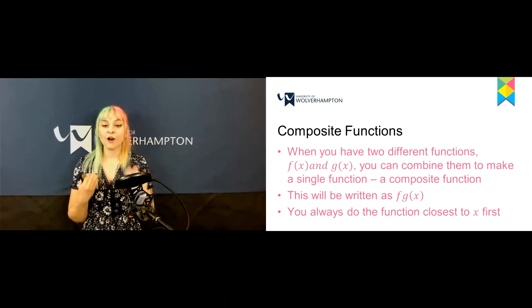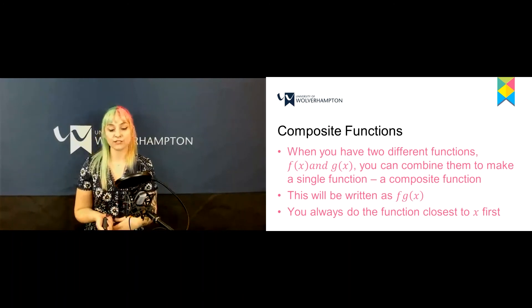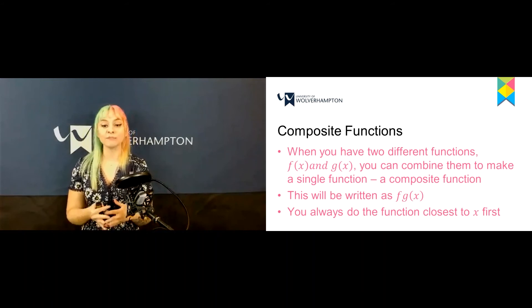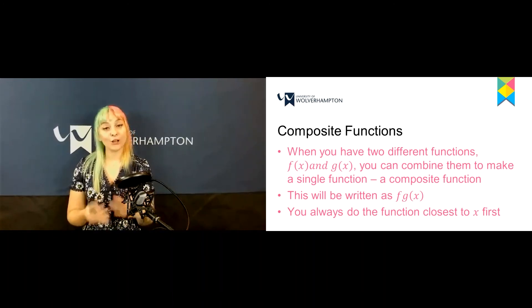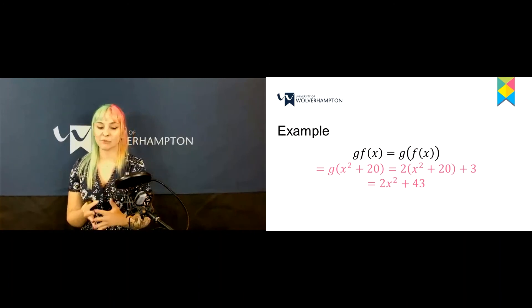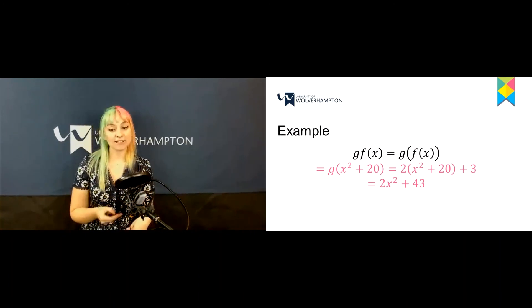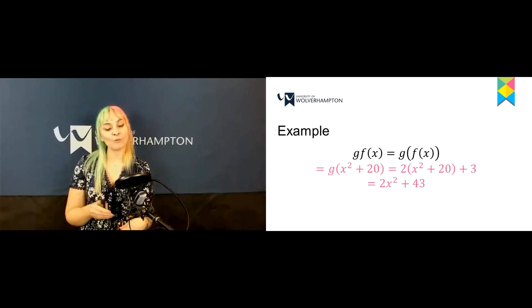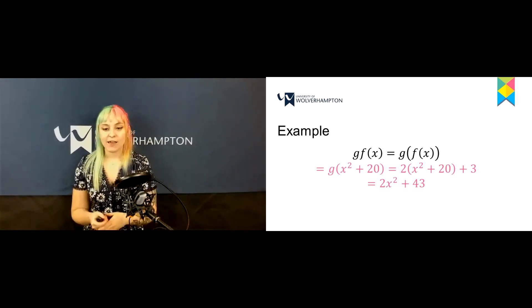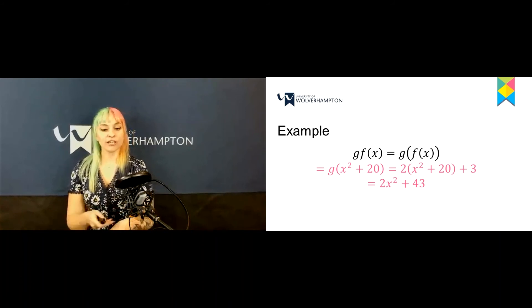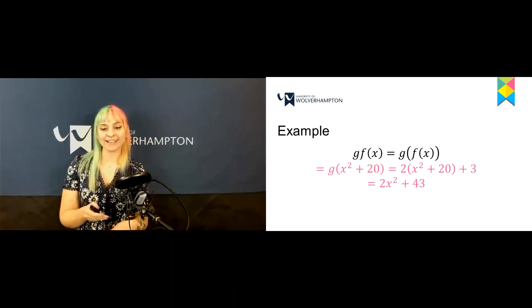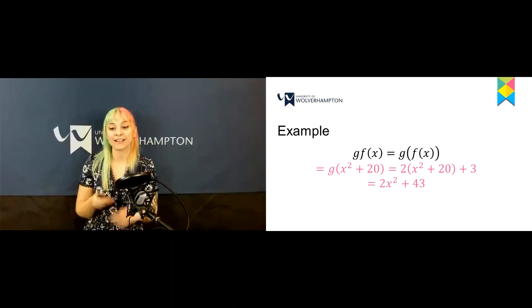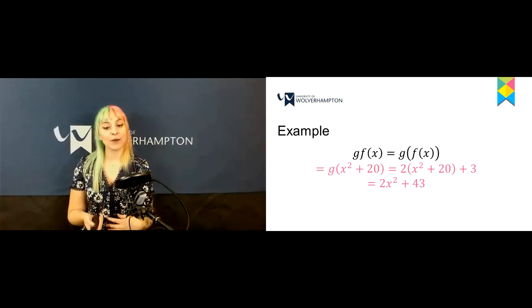You also have composite functions. When you have two functions f(x) and g(x), you combine them to make a single composite function written as fg(x), always applying the function closest to x first. Looking at this example, gf(x) equals g(f(x)), simplified as g(x squared + 20) plus 3, which leaves you with 2x squared + 43.